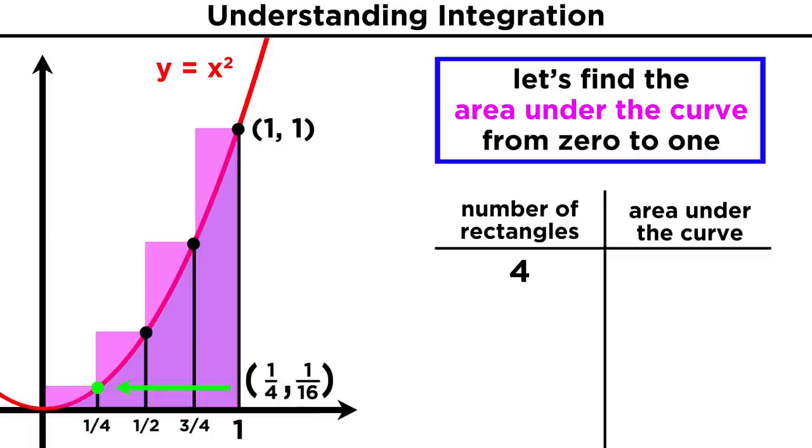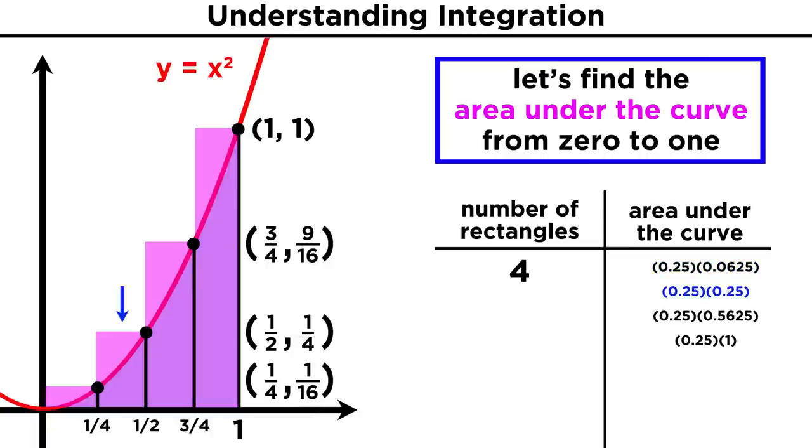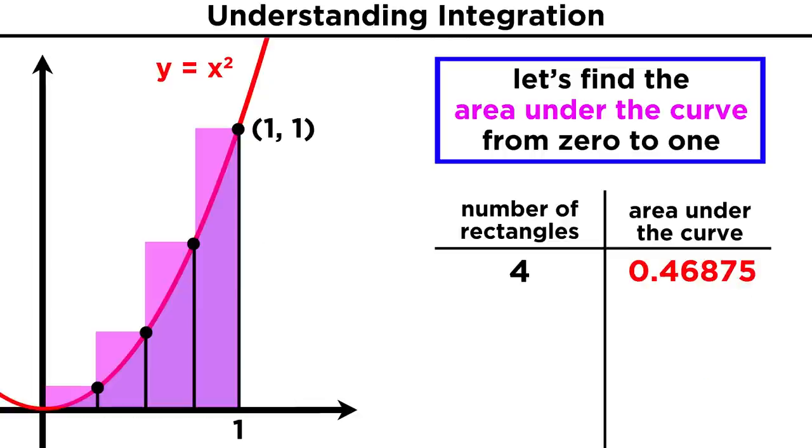or one sixteenth. The second rectangle has a height of one half squared, or one fourth. The third rectangle has a height of nine sixteenths, and the fourth has a height of one. We know that the area of a rectangle is base times height, so we just multiply these values together to get the area of each rectangle, and add them up to get the total area. This is around zero point four six nine. So this is our first rough approximation. We know that the true value is less than this, because these rectangles stick out above the curve.